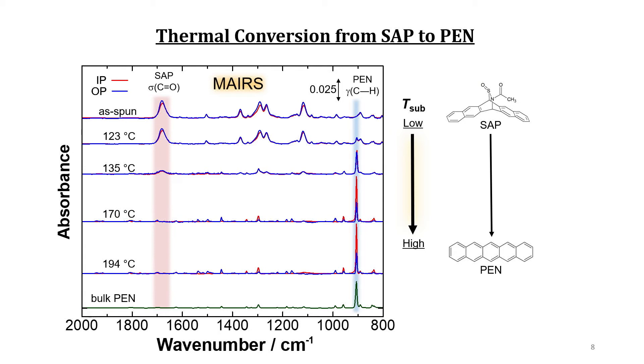Of interest is that, at this early stage, the generated pentacene has a random orientation because the IP and OP spectra are the same as each other for both shape and intensity. At a higher temperature, after finishing the conversion, an apparent difference is found between the IP and OP spectra indicating the molecular orientation of pentacene in the film.